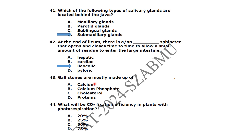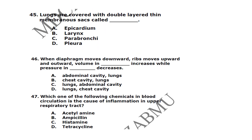Gallstones are mostly made up of cholesterol. What will be the carbon dioxide fixation efficiency in plants with photorespiration? It is 75 percent. Lungs are covered with a double-layer thin membrane called the pleura.